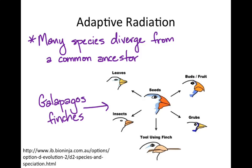One basic beak pattern was adapted to many different food sources and habits of acquiring food, including the cool one that uses a tool — a sharp needle from a cactus — to get at grubs that are hiding in trees.